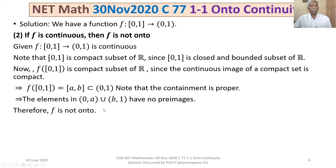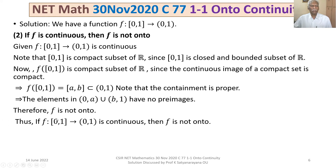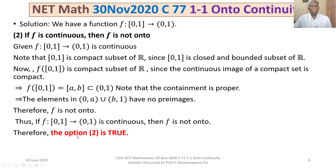Therefore, f is not onto. Thus, if f is a continuous function from [0,1] to (0,1), then f is not onto. Therefore, option 2 is true. But we have to find the false statements.